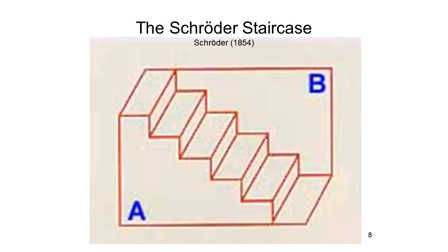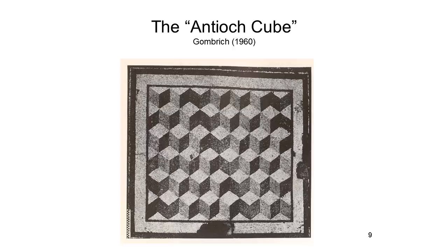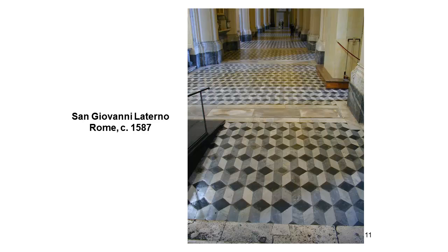Here is a variant on the Necker cube known as Schroeder's Staircase. When you first look at this, you probably see surface A as nearer to you, and surface B as farther away. But if you look long enough, you'll see the staircase flip upside down so that wall B now appears closer. Although the Necker cube and Schroeder's Staircase were only brought to the attention of psychologists in the 19th century, the effect is actually very old. You can see it in a mosaic panel found in a house in Antioch, Greece, dating from the second century, in a wall painting by a Native American artist at the Mission San Javier del Boc in Tucson, Arizona, dating from the late 18th century, and on the floor of the Basilica San Giovanni Laterano — the Pope's Church in Rome, Italy.